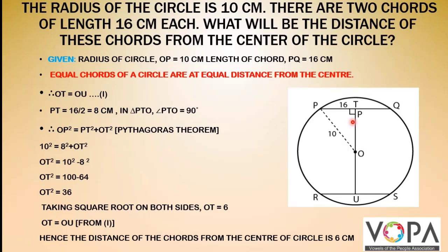In triangle PTO, angle T is 90 degrees. By the Pythagorean theorem: OP² = PT² + OT². So 10² = 8² + OT², therefore OT² = 100 − 64 = 36. Taking the square root on both sides, OT equals 6. Since OT equals OU, the distance of the chords from the center of the circle is 6 centimeters.